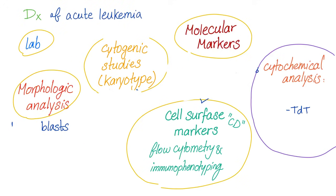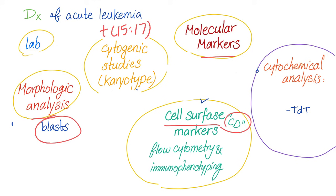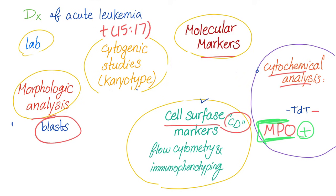To diagnose AML, you need labs and morphological analysis to look at the myeloid blasts, cytogenetic karyotyping to identify translocations like t(15;17), molecular markers, cell surface markers (CDs), and cytochemical analysis. AML is TdT negative but myeloperoxidase positive — it stains green. This is different from ALL, which is TdT positive and myeloperoxidase negative.